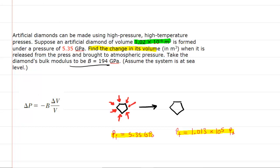Since we're trying to solve for the change in volume, we're going to first algebraically solve for that quantity. We can do that by first multiplying both sides of the equation by V. The V's cancel out on the right hand side. Then to solve for the change in volume, divide both sides by negative B. The negative B's will cancel out, leaving you with change in volume.